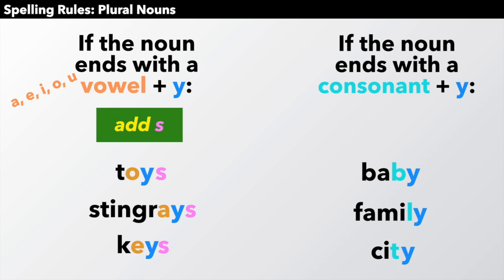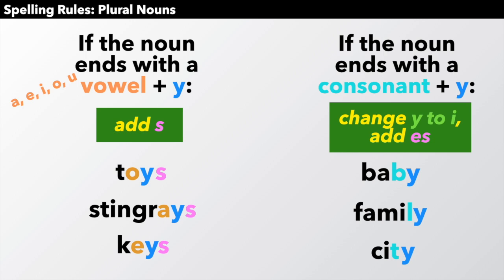However, if the noun ends with a consonant and y, you're going to change the y to i and then add es. And remember the consonants are everything except the vowels.